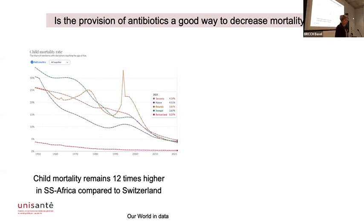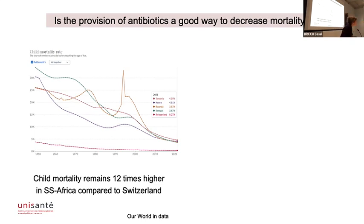The background: we wanted to address the problem of child mortality, which is getting much better in low-income countries. Here you see the different countries where we are deploying our digital tool, EPOCT, within DYNAMIC and another project called TIMSI. It went down to around 4-5% for under-fives, but we are still 12 times higher than in Switzerland, for example. So there is still a lot of work to do.